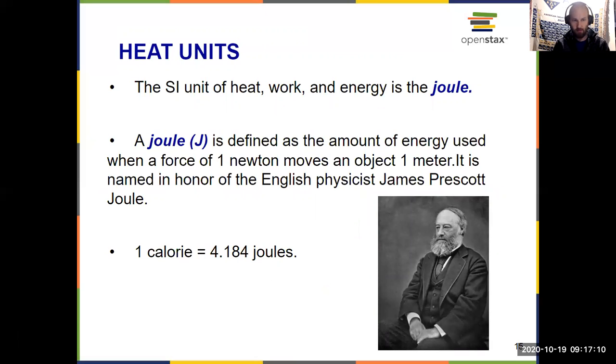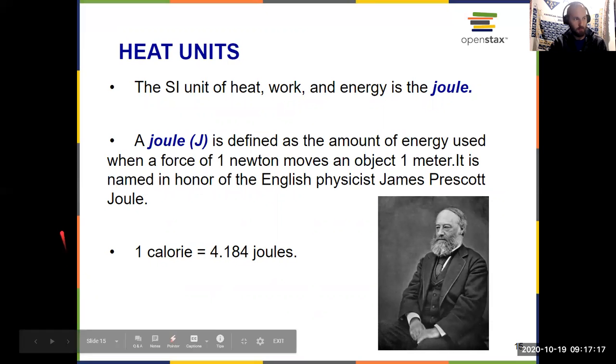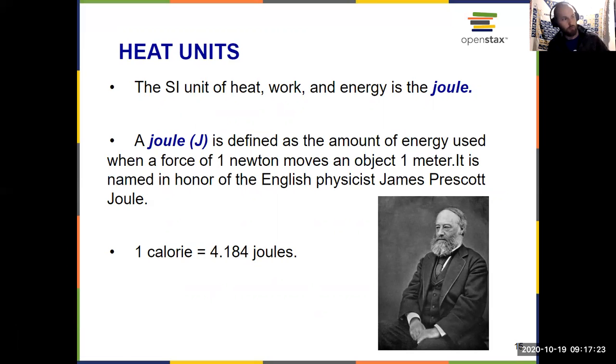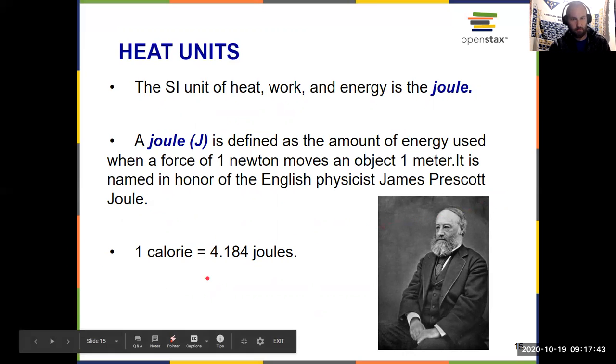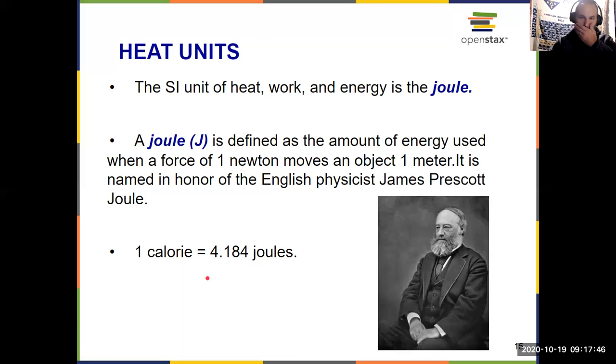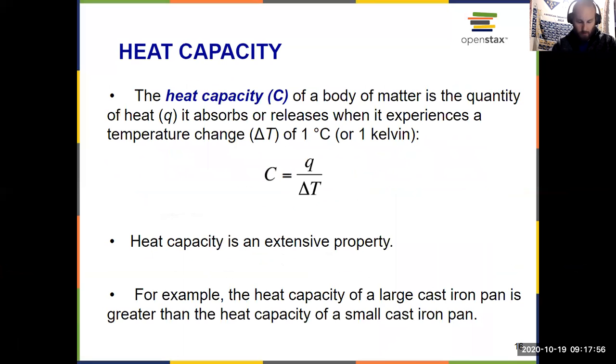So the SI unit that we have for heat, work, and energy is Joule, abbreviated with the letter J. So symbol J represents Joule. And that's defined as the amount of energy used when a force of one newton moves an object one meter, named after this guy, James Prescott Joule. And if you've taken physics and worked with this in the past, it's also equal to one kilogram meter squared per second squared, or one newton meter. That gives us some ability to work with the units there. And it ties into the calorie. One calorie is equal to 4.184 joules. And with that in mind, it allows us to do some calculations. So you don't have to know the calorie. You do need to know the Joule in this chapter, for my class anyway.